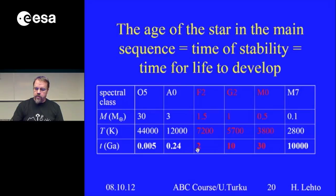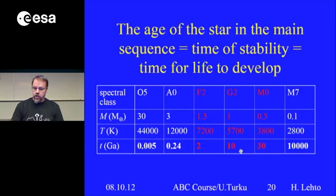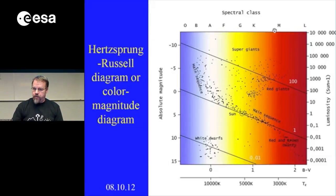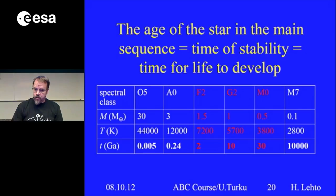For life to form, a star should stay around for at least 2 billion years — 10 billion years is better for so-called higher creatures like us. So the main sequence from about spectral class F to M is good for life. Stars more massive than F are too short-lived, and M dwarfs have other problems we won't go into here. When habitable zones are discussed in this course, those details will be brought up.